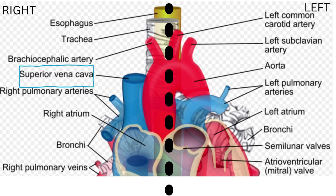On the left side of the SVC is the brachiocephalic artery and the ascending aorta. On the right side is the right phrenic nerve with accompanying vessels, the right pleura, and the upper lobe of the right lung. Anterior to the SVC are the chest wall, thymus, internal thoracic vessels, and the anterior margin of the right lung and pleura. Posterior to the SVC is the trachea, right vagus nerve, and the root of the right lung. The portion of the SVC within the pericardium is covered by the serous layer of the pericardial membrane.